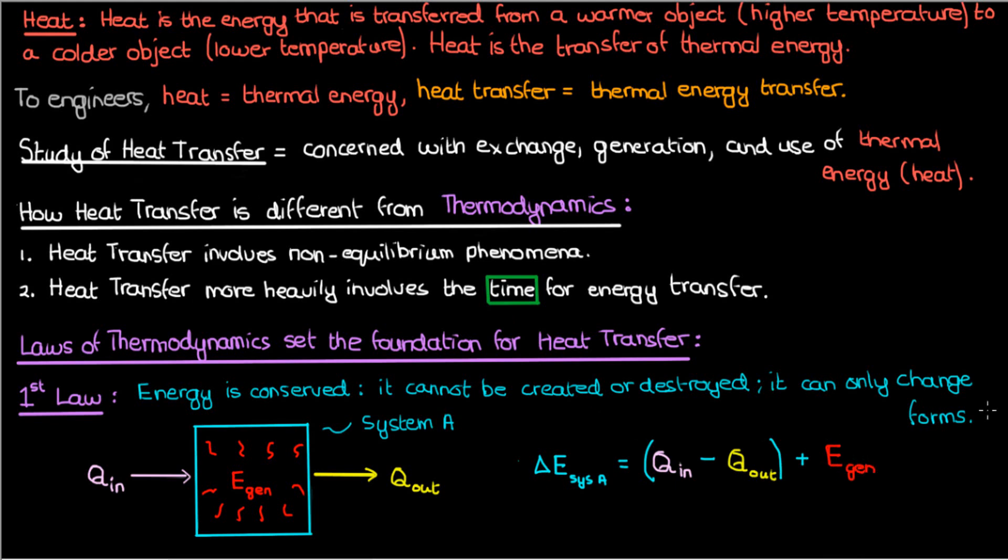Bear in mind that E_gen is thermal energy generated from other forms of energy, like chemical, electrical. It's stored within the system A to begin with. There's no energy that's spontaneously created or destroyed. Energy can't come from nothing, it has to come from something.